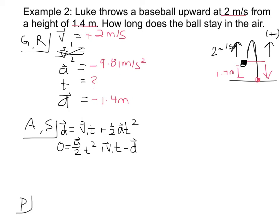So A over 2 T squared plus V1T minus displacement. Let's put in our numbers. So we have here 0 equals A over 2. So that's negative 9.81 divided by 2. So this is negative 4.905 meters per second squared times T squared plus positive 2 meters per second times time. And then minus negative, so I end up with plus 1.4 meters.